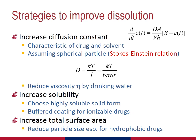Another way to increase solubility is to ensure that the particle surface is at a pH which promotes ionization maximally. One way to promote this is to use an excipient or coating on the particle that will buffer the pH of the diffusion layer so that the drug remains, to the extent possible, in an ionized state which is more soluble in water.